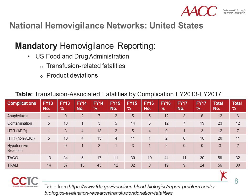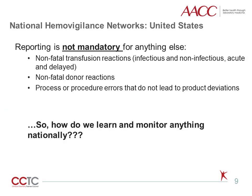A representative table from the 2017 annual FDA report shows the reported number and proportion of deaths from transfusion by etiology from 2013 to 2017. In 2017, the most commonly reported cause of transfusion-related mortality in the U.S. was transfusion-associated cardiac overload, or TACO. Unfortunately, the reporting of other adverse events from transfusion — such as non-fatal donor and patient reactions and errors that do not lead to product deviations — are not required in the U.S. As a result, clinically useful findings such as those produced by the SHOT system in the United Kingdom cannot be currently obtained via a single formal hemovigilance system in the U.S.